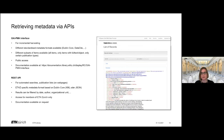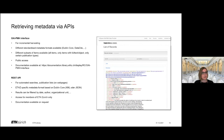Of course, if you are familiar with using APIs, it might be much easier to access certain publication lists or subsets of items from the research collection via our APIs. We have a so-called OAI-PMH interface, which can be used for integrating research collection items into other search engines. It's used for incremental harvesting of publications and delivers different standardized metadata formats such as Dublin Core or DataCite. You can also use it to retrieve different subsets of items, for example only items with full text or only certain publication types. This is a publicly accessible API and there is also a public documentation in our manual.